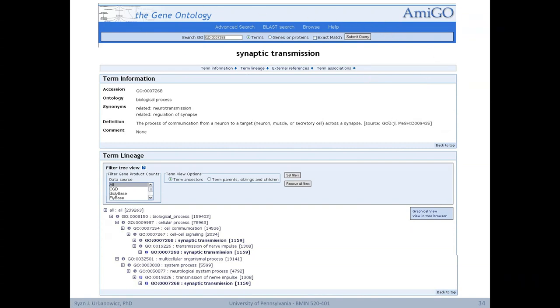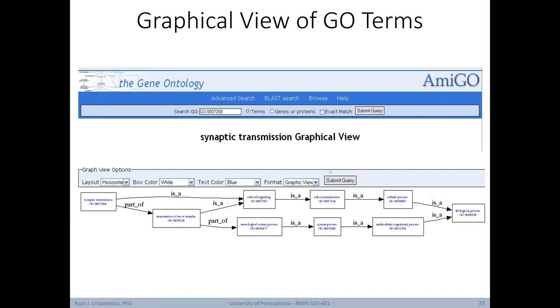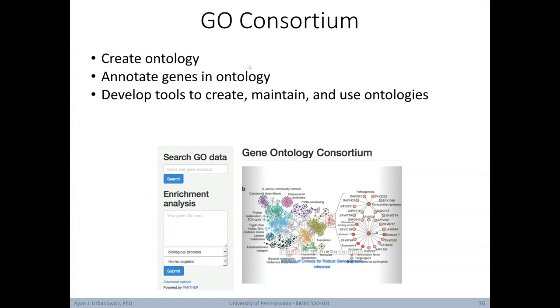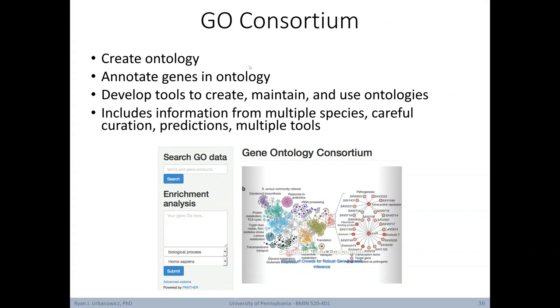It will include basic information about that term, such as which of the three sub-ontologies it belongs to, synonyms, definition, and the location of this term within the hierarchy. Amigo also allows you to create a graphical view of the GO term relationships. One last point to mention is that the Gene Ontology is managed by the GO consortium. This consortium is responsible for having created the ontology, continuing to annotate genes within the ontology, developing tools to create, maintain, and use ontologies in general. And they lead efforts to include information from multiple species, conduct careful curation, make predictions on new annotations, and develop new tools for the future.